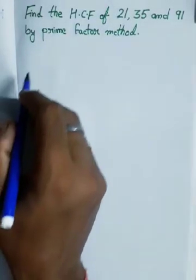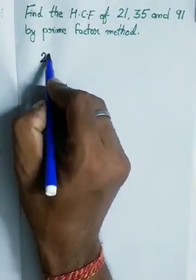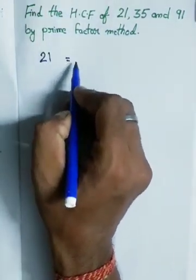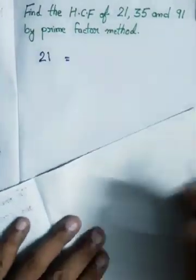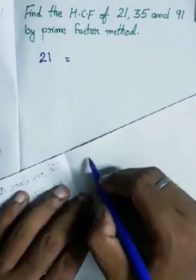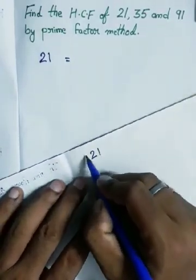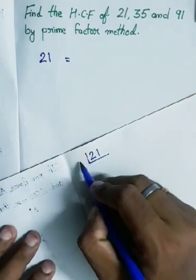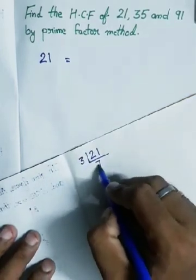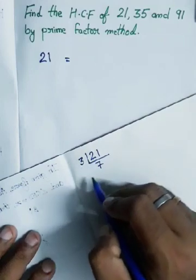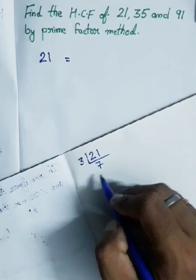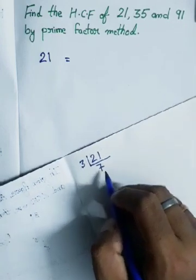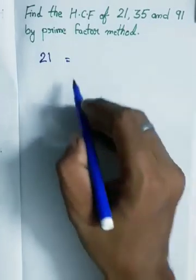First of all, take out the prime factor of 21. If we divide 21, we start with 3: 3 times 7 is 21. Now 7 is only divisible by itself. So 3 and 7 are the prime factors, and we can write 21 as 3 into 7.